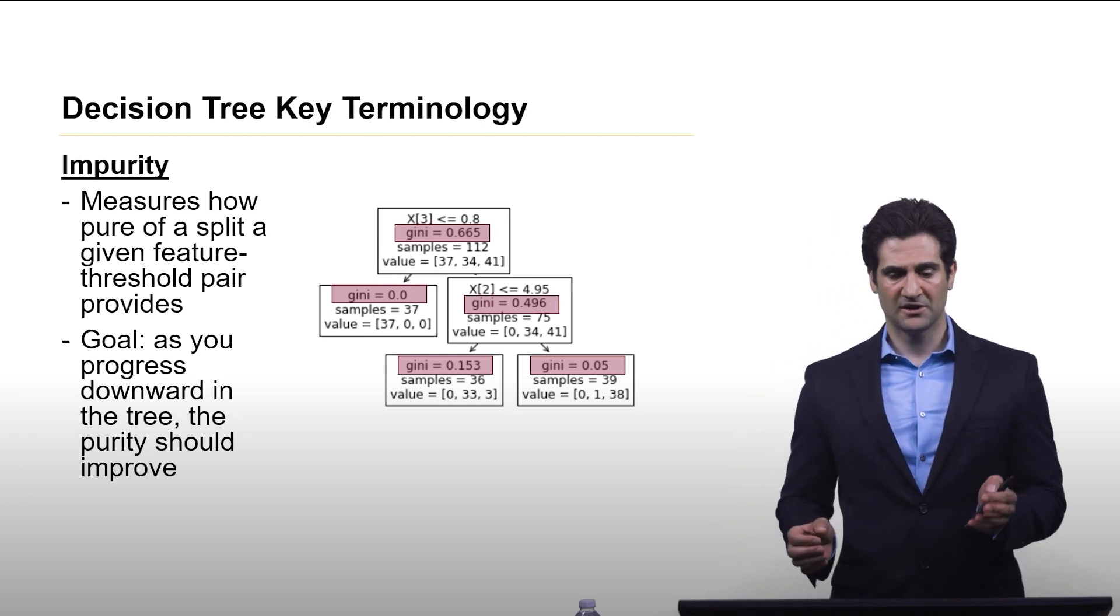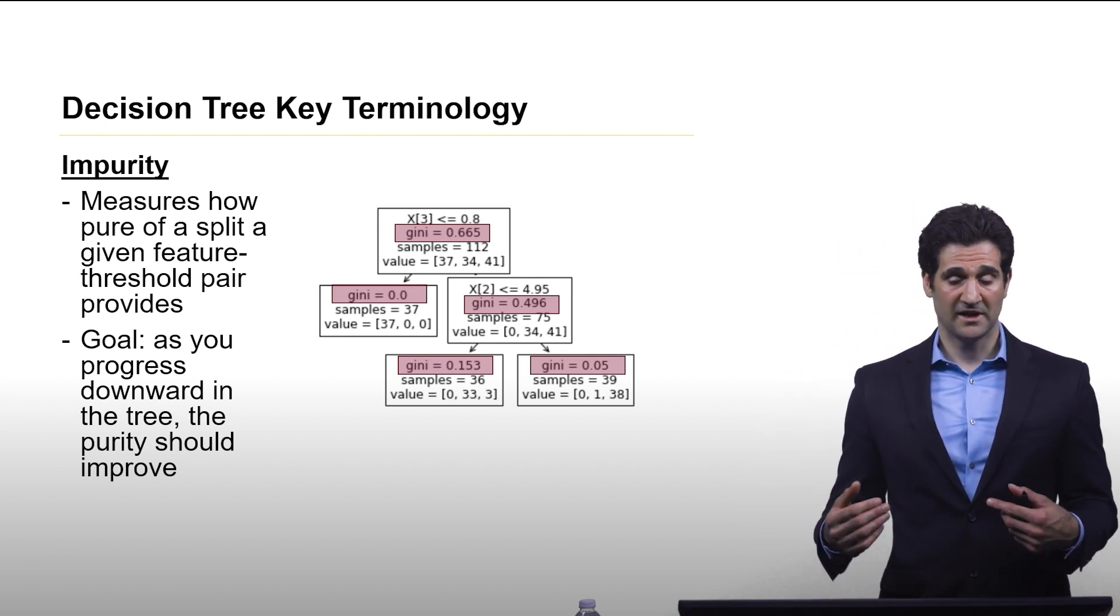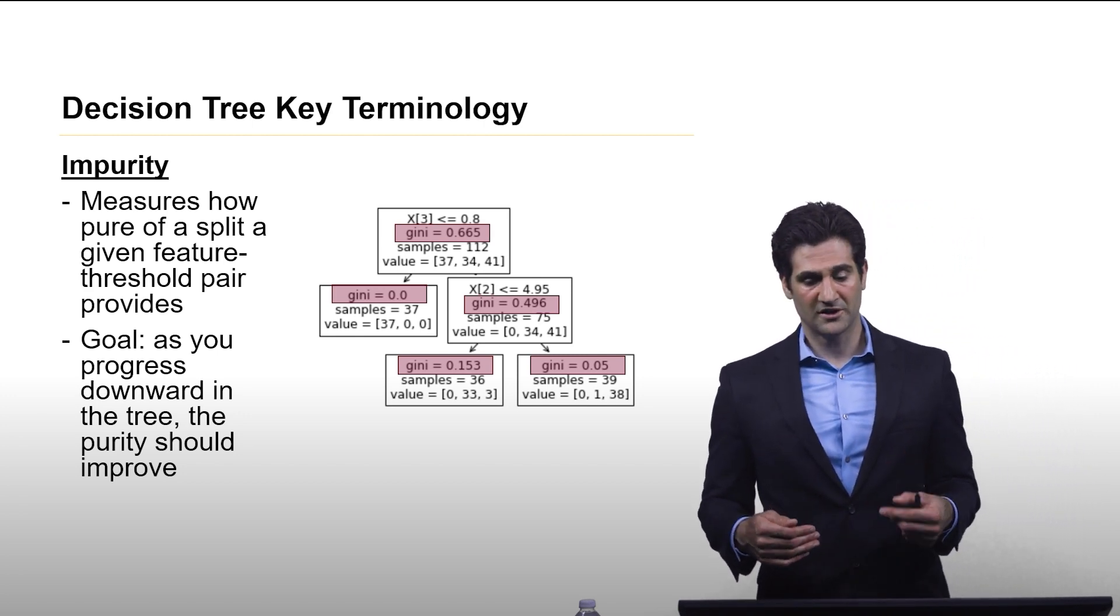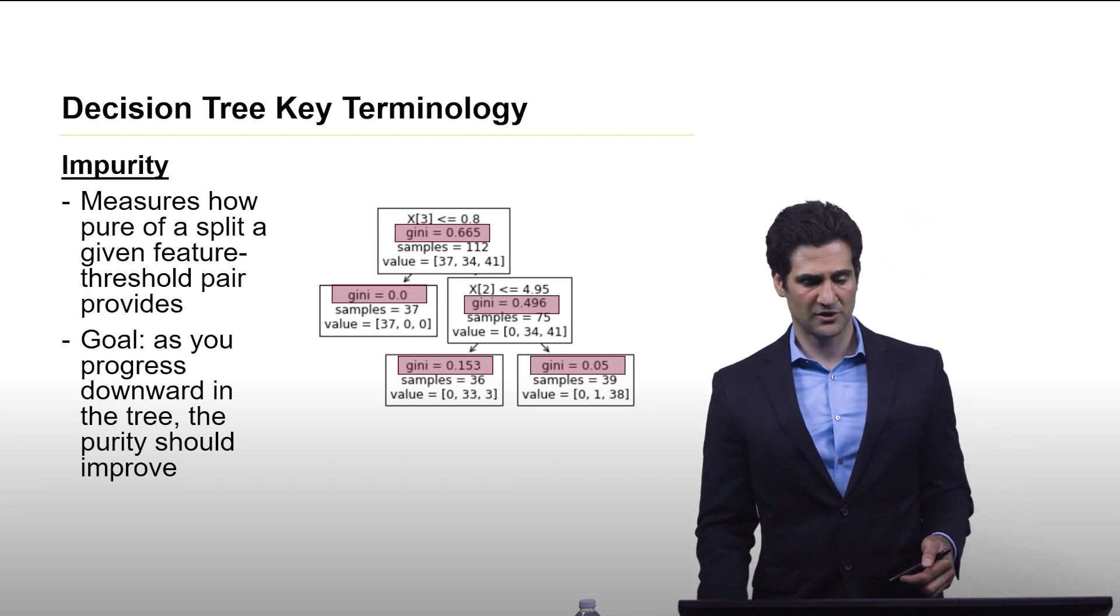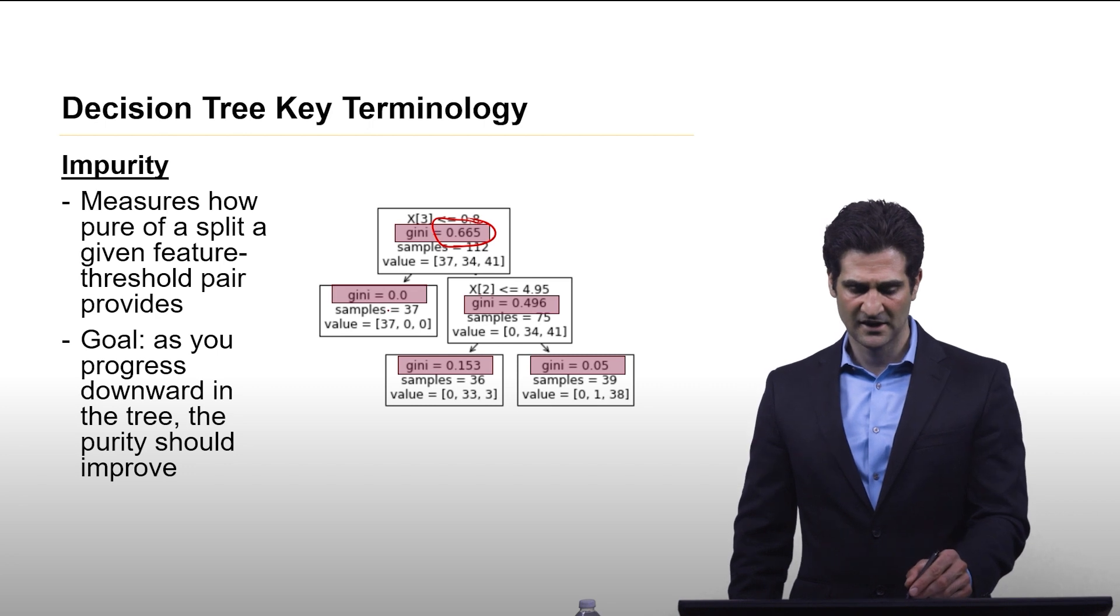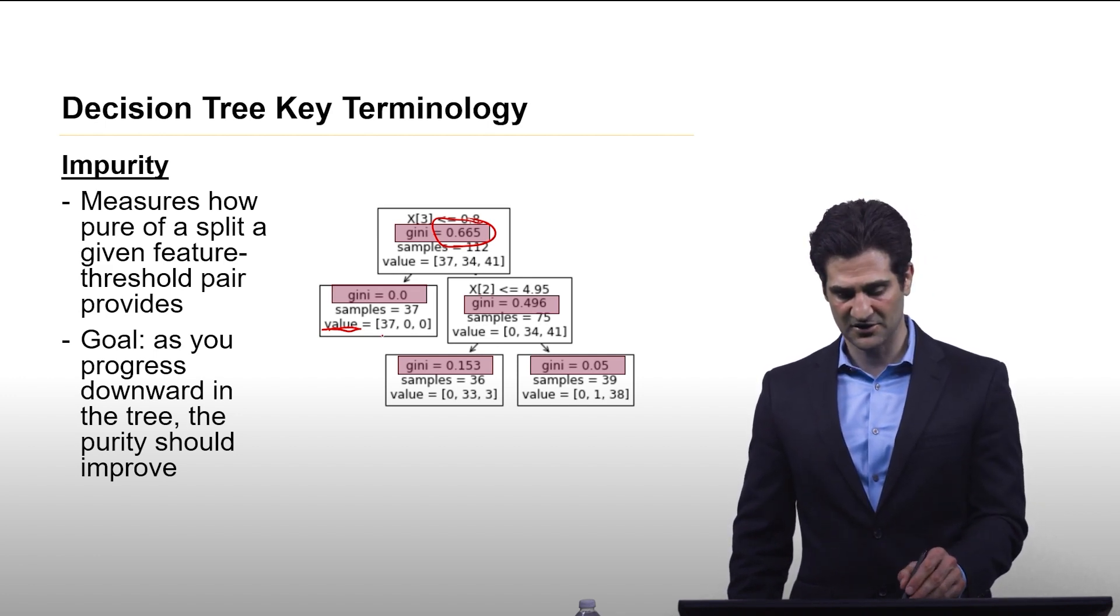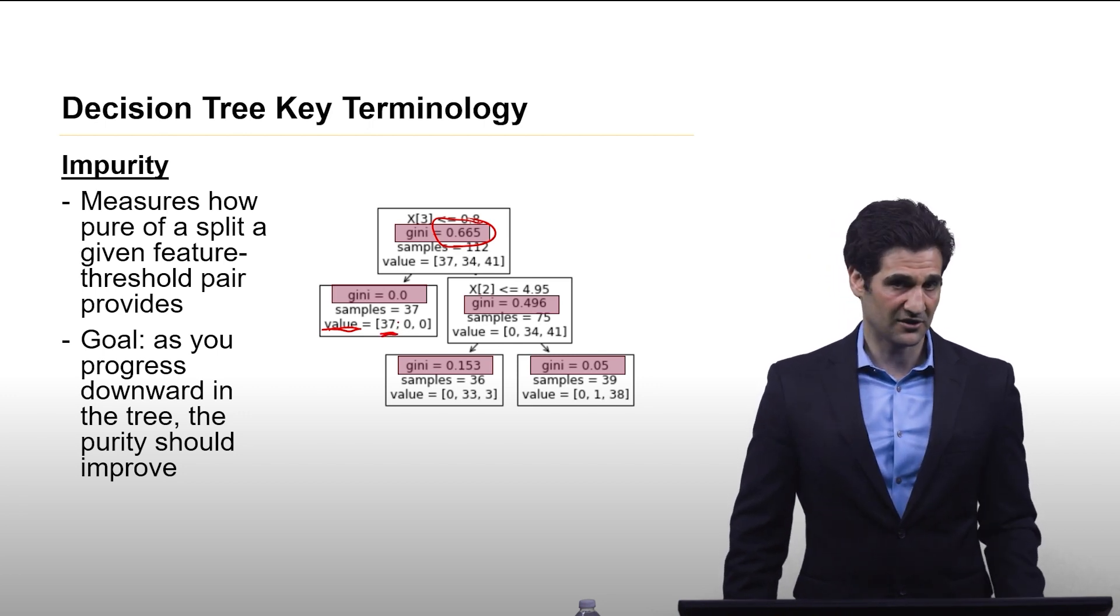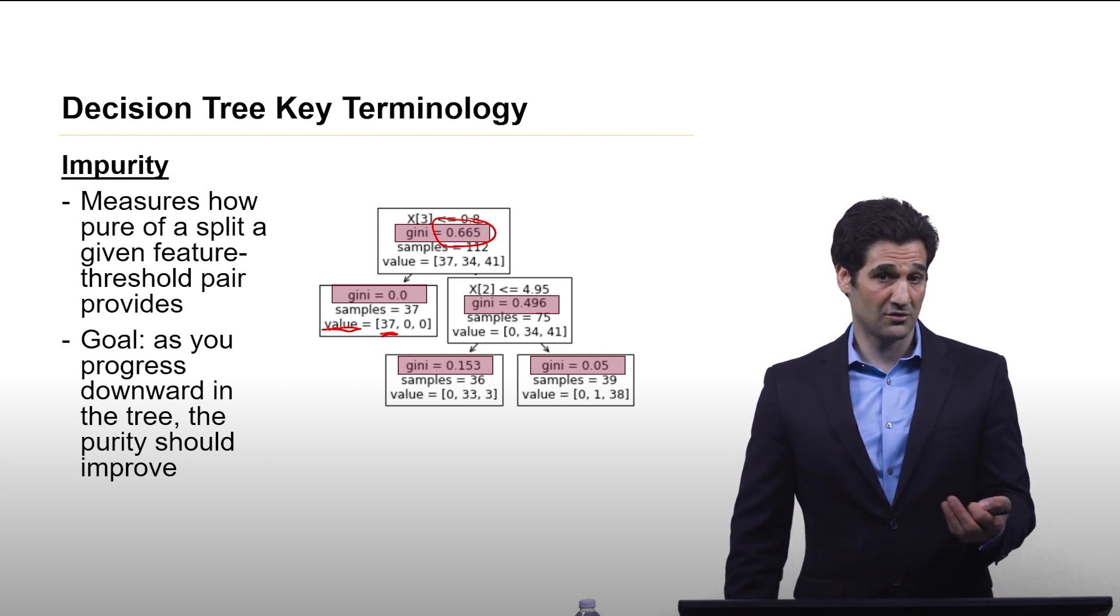Impurity. Now, impurity is kind of a core concept to the decision tree. This is measuring how pure of a split is being made at each iteration. And the whole goal is as you go down the decision tree, you want to reduce impurity. And we could see impurity here is measured with something called the Gini index that we'll describe shortly. And we start out, the value is 0.65, and at this leaf node here, it drops to 0, which makes sense because when you look, this thing here that says value, this is talking about how many samples in each class meet the requirements of this leaf of the decision tree. And 37 are in the first class, and there's no samples in other two classes if you take this path in the decision tree. And so the Gini index gives you a zero, which means there is no impurity.